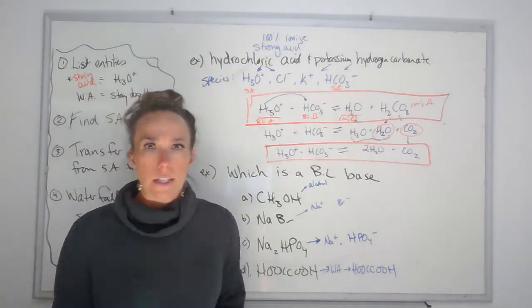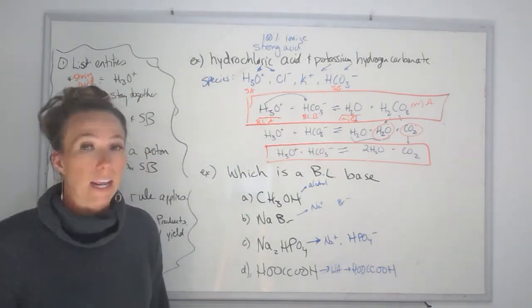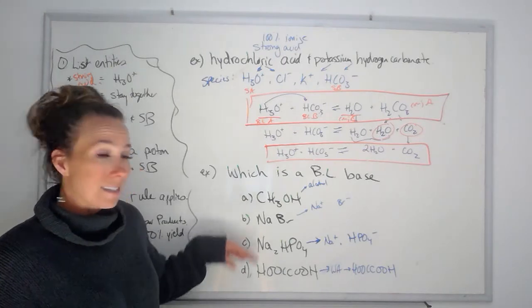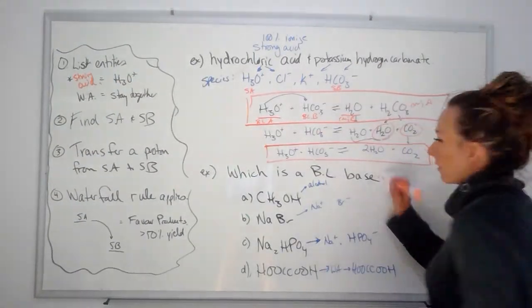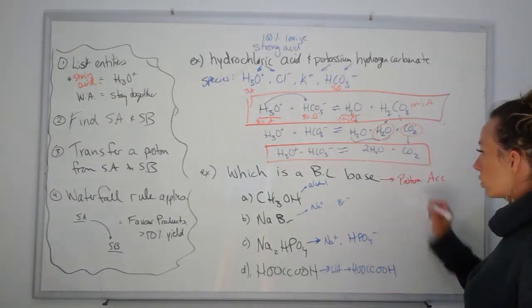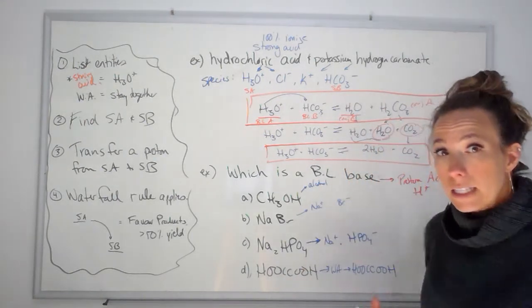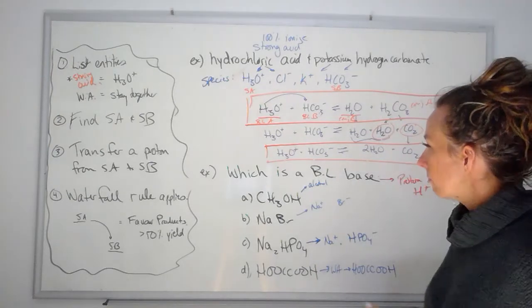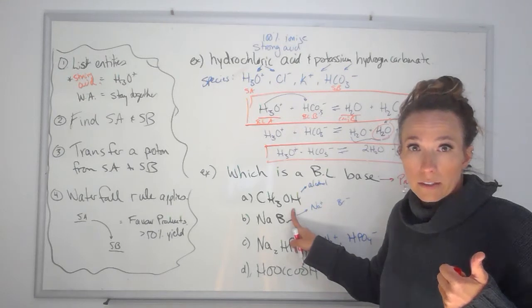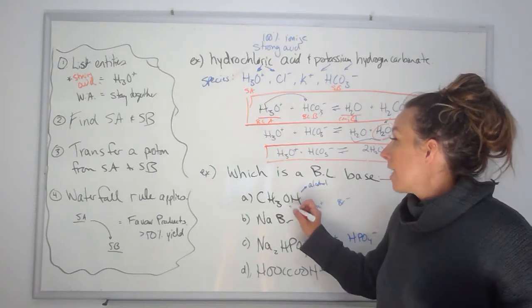Here's another question that looks very different, but I'm still going to use these five steps to answer it: which is a Bronsted-Lowry base? Here's my list. I go to my data booklet and put my finger on all those bases and don't find any of these. So I have to think about the literal definition — a Bronsted-Lowry base is a proton acceptor, which means I can add an H+ to it. I'm going to look at my species list and see which one I could add an H+ to. This is methanol from our organic unit, and this is a distractor for a base in science 10, chem 20, and on the chem 30 diploma. This is not a base.